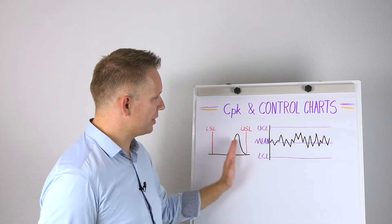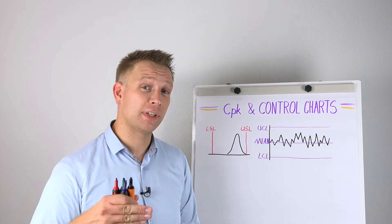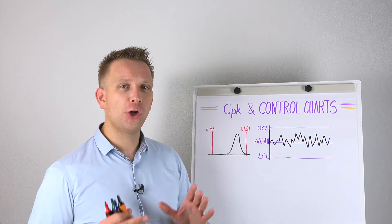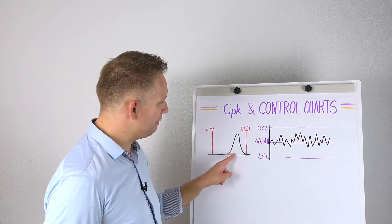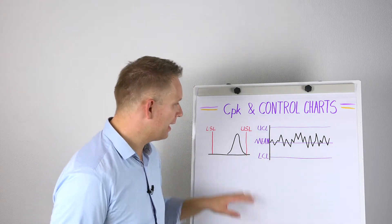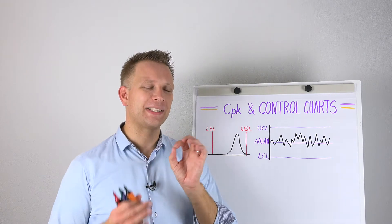But here, because the process is not centered, and this is quite often part of the question, if your process is not centered, the CPK will be lower than the CP. But now how can you see this from your control charts? And here is the tricky part.